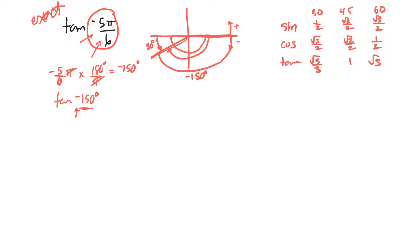So the tan of negative 150 is the same as the tan of 30 degrees. Then off my chart, tan of 30 is right there, my answer will be root 3 over 3.